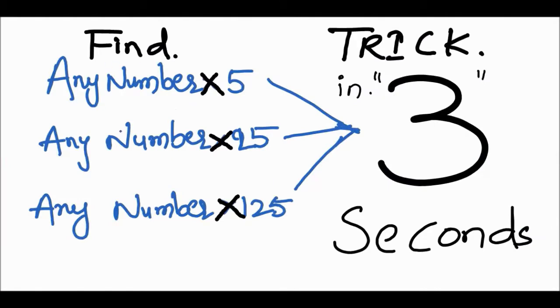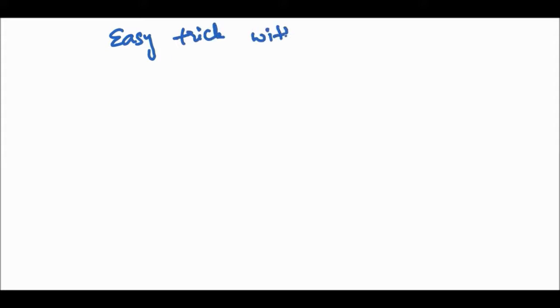We are going to find tricks to multiply any number by 5, 25, and 125 in 3 seconds. Let's start with multiplying any number by 5, 25, and 125.